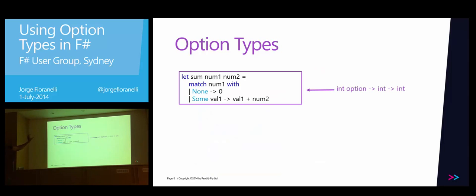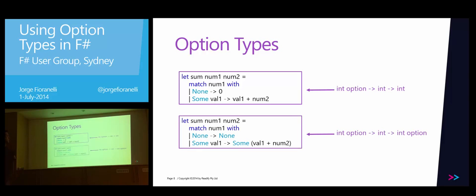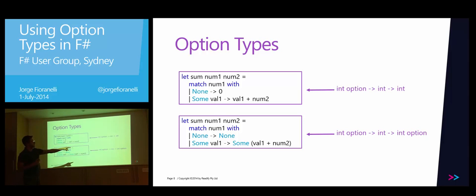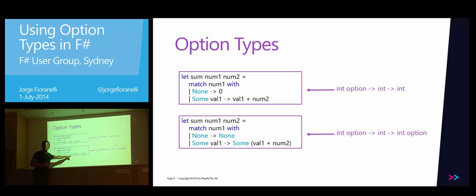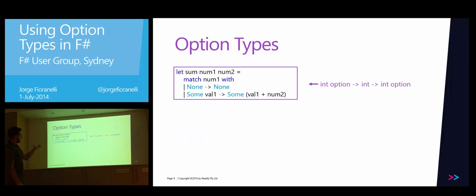So far we have just the first argument as an option. Now we want to go further and be able to return an option, while the second argument stays as an integer. Looking at the signature: we have an option integer, a non-option integer, and we return an option. The compiler knows this because instead of returning zero in the none case, we return none — it doesn't make sense to do the computation. And if we do have a value for num1, now we need to return some of that computation, wrapping the result inside the some option.